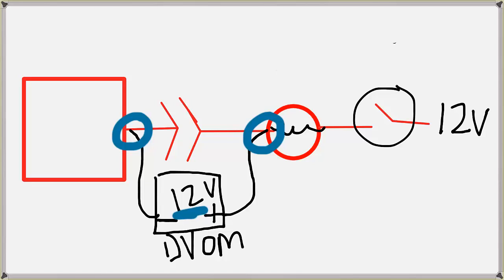So if I engage this switch here, I'm going to send 12 volts this way through that load device.